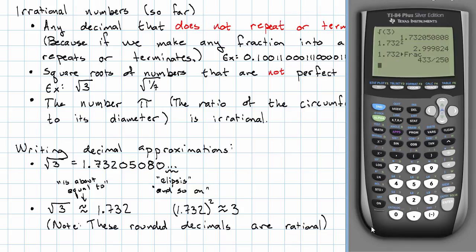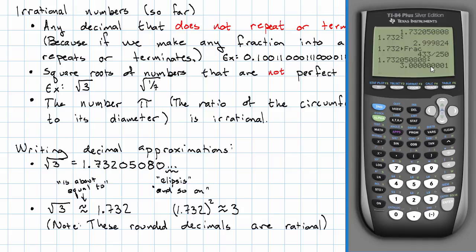Even this long decimal that the calculator gives me, 1.732050808. If I square that, the calculator doesn't even give me exactly three. This number is very, very, very close to three. This decimal is very, very, very close to the square root of three. But it's not exactly the square root of three.